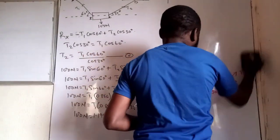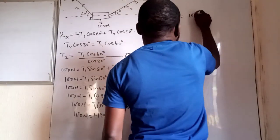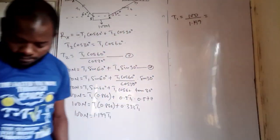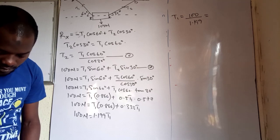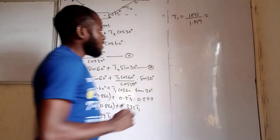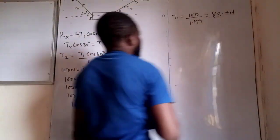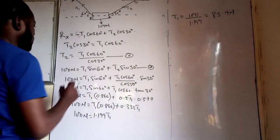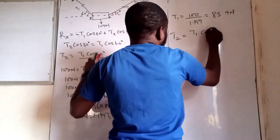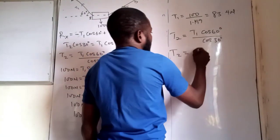Hence T1 equals 100 divided by 1.199, which gives us 83.4 newtons. Now for T2, we go back to T2 equals T1 cos 60 divided by cos 30.